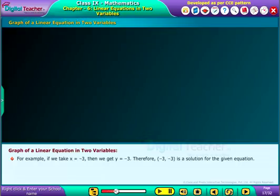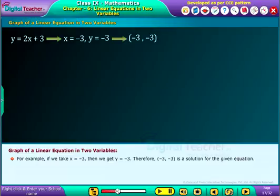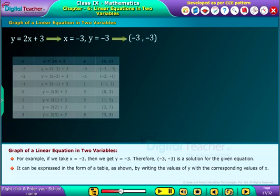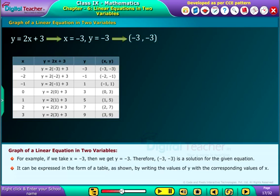For example, if we take x equal to minus 3, then we get y equal to minus 3. Therefore, minus 3, minus 3 is a solution for the given equation. It can be expressed in the form of a table as shown, by writing the values of y with the corresponding values of x.